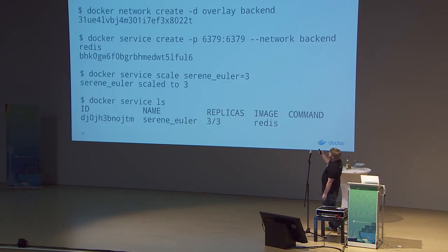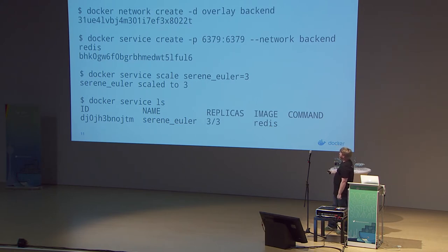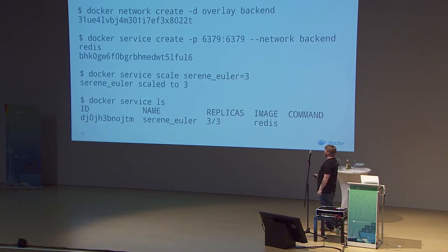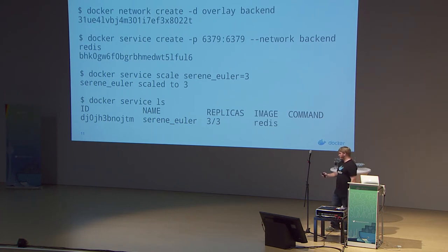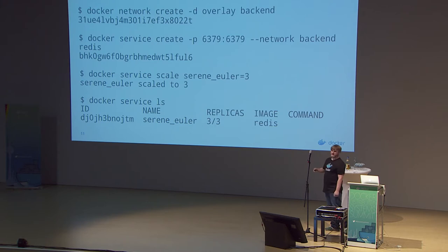Looking at actual commands: you declare a network, then declare a service connecting to that network backend, update it by scaling to three instances, and observe it by listing the actual replicas running in this service. Once you've done all this, you can tell it's converged and running. I highly suggest checking out the documentation and playing with this — it's quite cool.